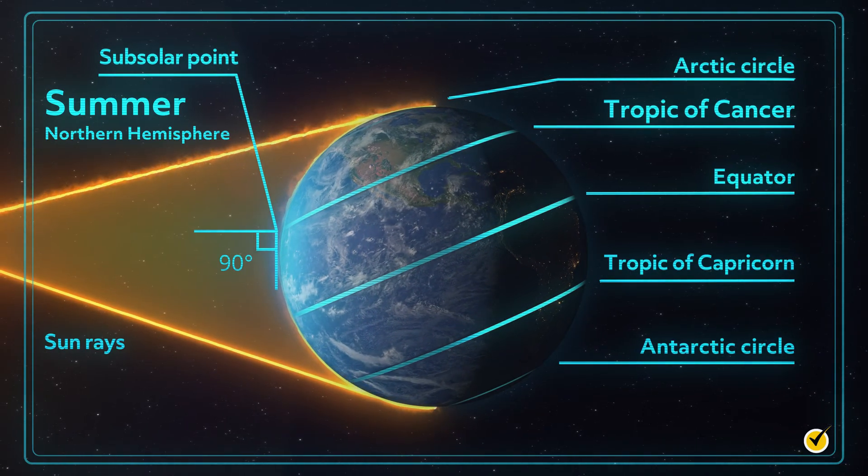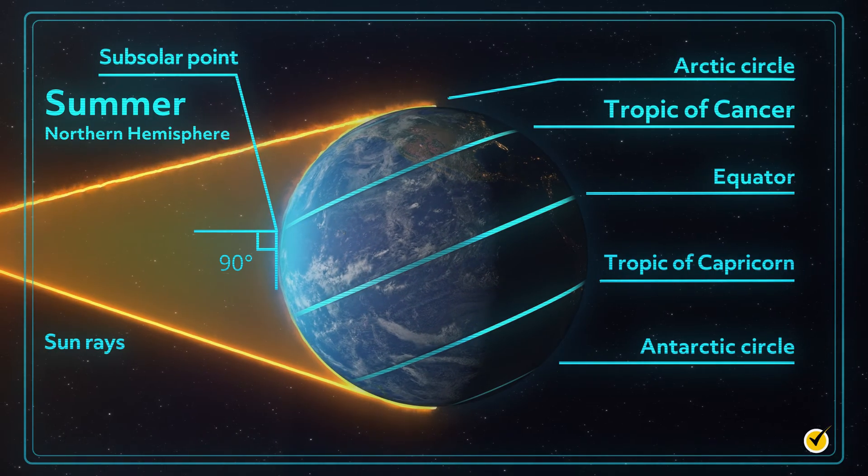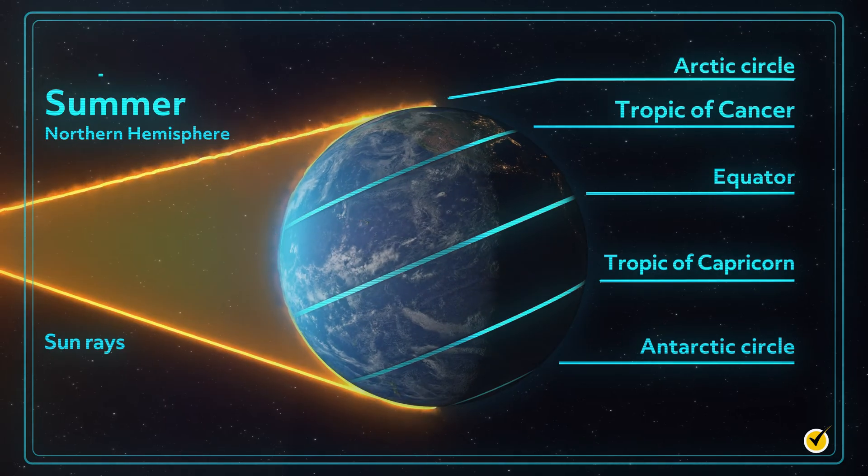During North America's summer season, the increase in direct sunlight causes a rise in temperatures. More sunlight equals more heat.